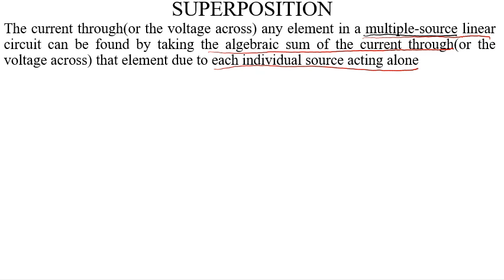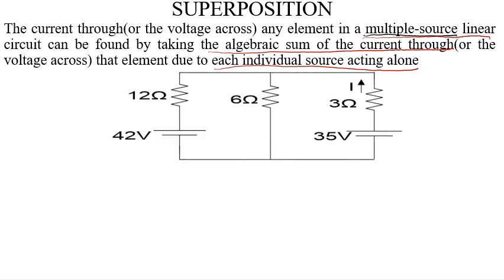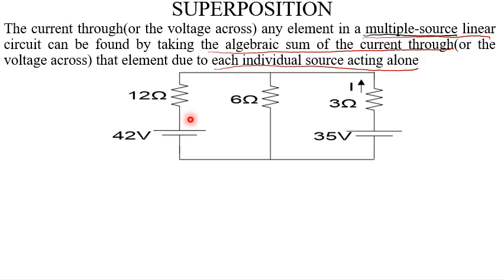This theorem means that when given a multiple source circuit — we can see voltage sources here, we have 42 and 35 volts — and they ask us to find the voltage or current across any element, we can simply solve the circuit by taking each voltage source acting alone. Meaning we can split this circuit into two parts.